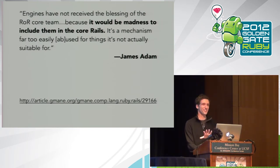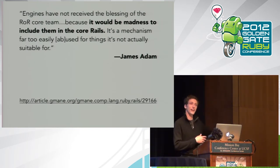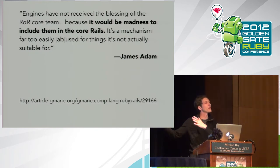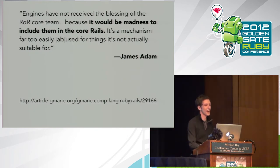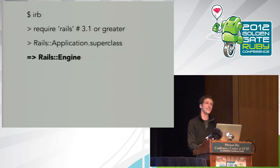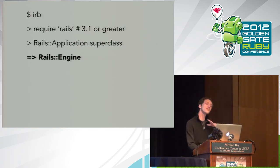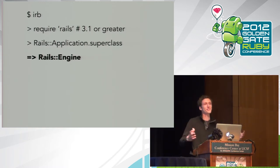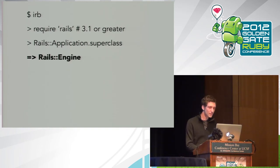So DHH, the creator of Rails, didn't want engines in Rails, and James Adam, the creator of engines, thought it would be madness to have engines built into Rails. How did we get from there to here — from madness to a world where a Rails application is an engine, and you cannot build a Rails application without building an engine?